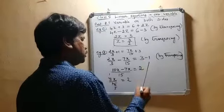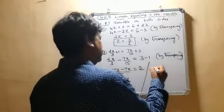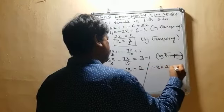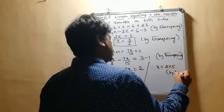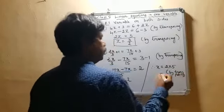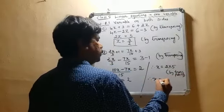If I am going to transpose this to the other side, therefore, x equals 2 multiplied by 5. This is by transposing again. Therefore, x equals 10.